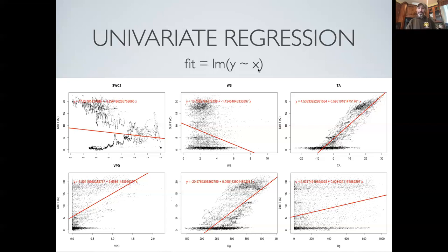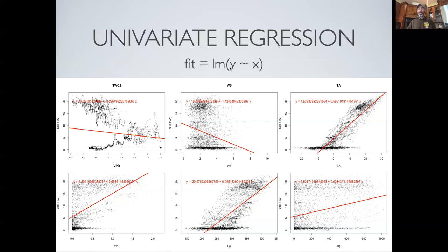The other important gotcha about linear models is that the order — Y tilde X — which makes sense when writing down the equation, is the exact opposite of what we do when we make a plot. When we make a plot, we do X comma Y. So you'll find yourself fitting Y tilde X and then plotting X comma Y right after it, because you want to see the data and the regression model together.